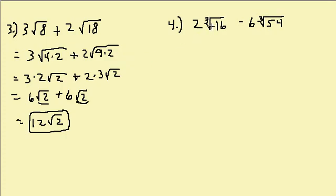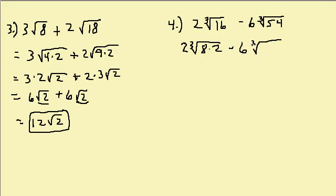Let's take a look at one more. I have 2 cube root of 16 minus 6 cube root of 54. The radicals aren't the same, but I can simplify. Cube root of 16 is cube root of 8 times 2, and cube root of 54 is cube root of 27 times 2. So I have 2 times the cube root of 8 times 2, minus 6 times the cube root of 27 times 2.